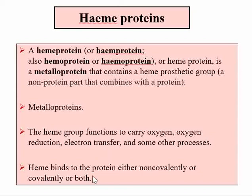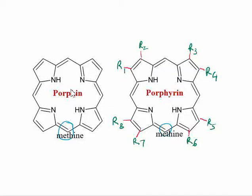In a heme protein, heme binds to the protein either covalently, non-covalently, or via both types of bonds. To understand the structure of a heme protein, we must first understand the structure of heme itself, since heme is the main prosthetic group in these proteins.